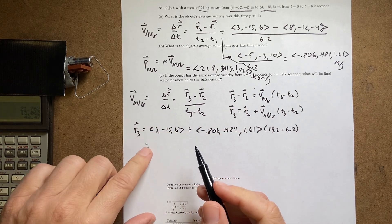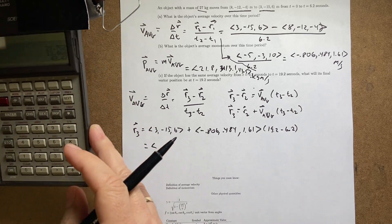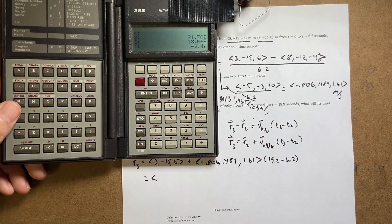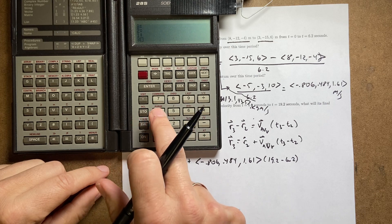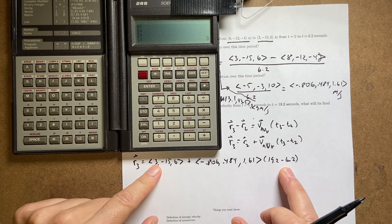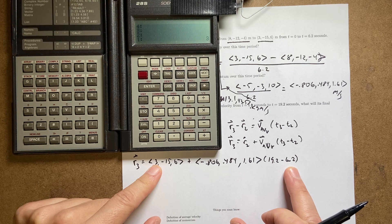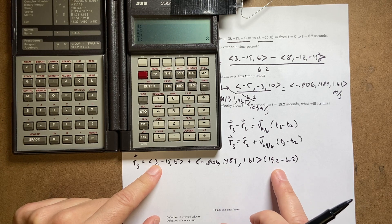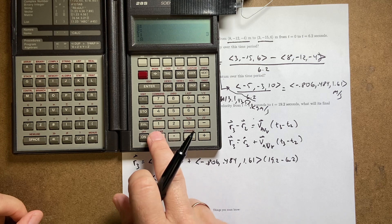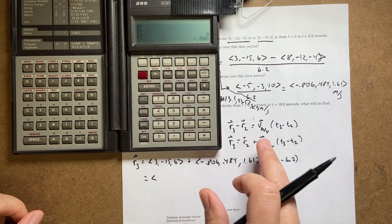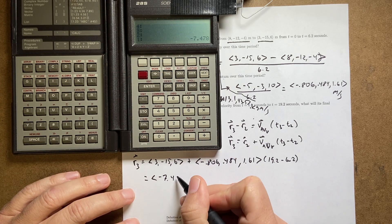So I can just put that all in my calculator. I'm going to do all the x's first, then all the y's, then all the z's. So here I'm going to have 3, enter. Then I'm going to have 19.2 minus 6.2, which is 13 seconds. So then I have 13 times this. So I'm going to say 0.806, change sign, enter, 13 times plus. So my x coordinate is going to be negative 7.48.